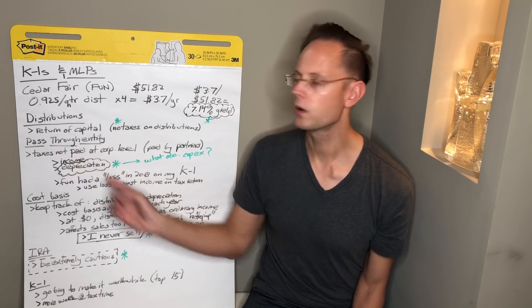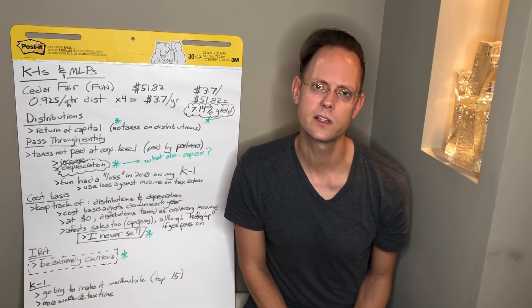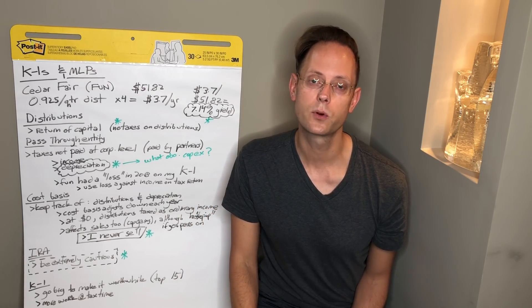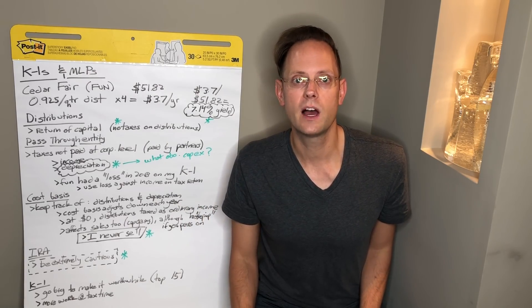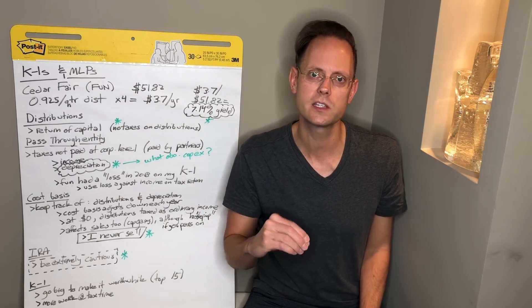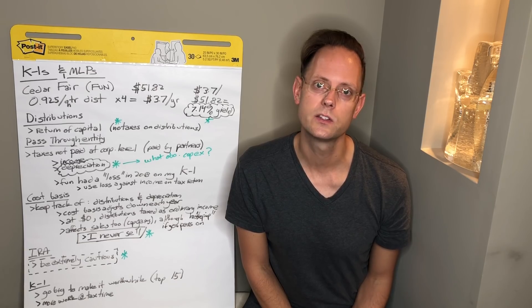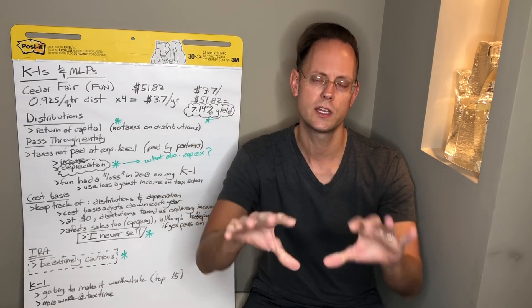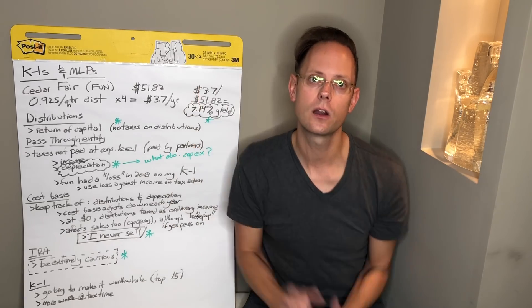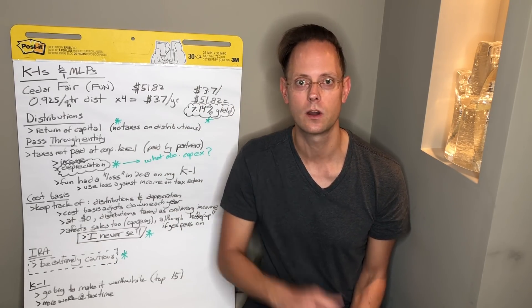One thing that's really important is that Master Limited Partnerships — especially Cedar Fair, being in a real estate-centric space — will pass through not only net income, but also depreciation. This is really the benefit of this structure; it's very tax-efficient for the right investors in the right circumstances. On the K-1 I received, Cedar Fair lost money in 2018. Not only did I receive distributions that I will not be taxed on because they're return of capital, but I also got a share of the company's loss due to depreciation, meaning I can write that off against other income on my tax return.